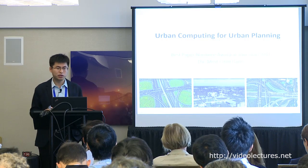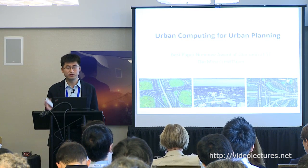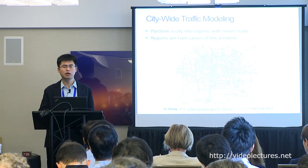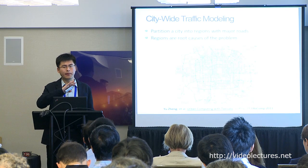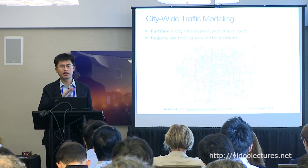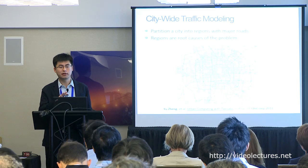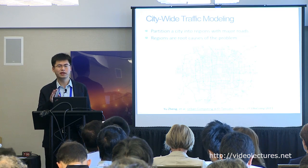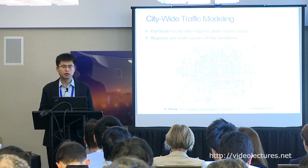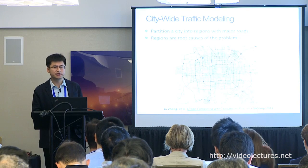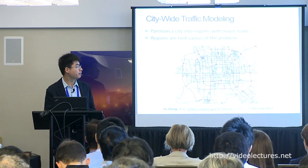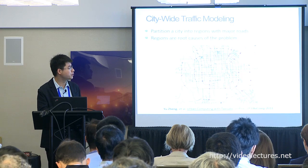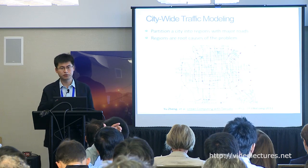The first example is using big data to improve urban planning — specifically, to identify designs in the road network that do not work well. We partition a city by major roads such as avenues and highways, where each region is bounded by major roads.